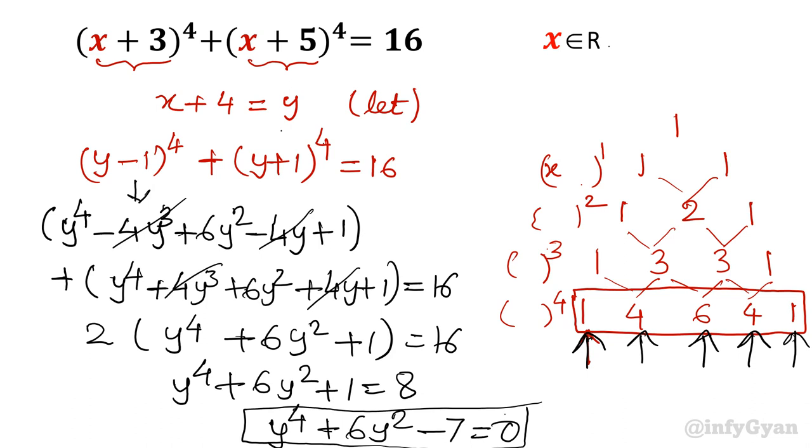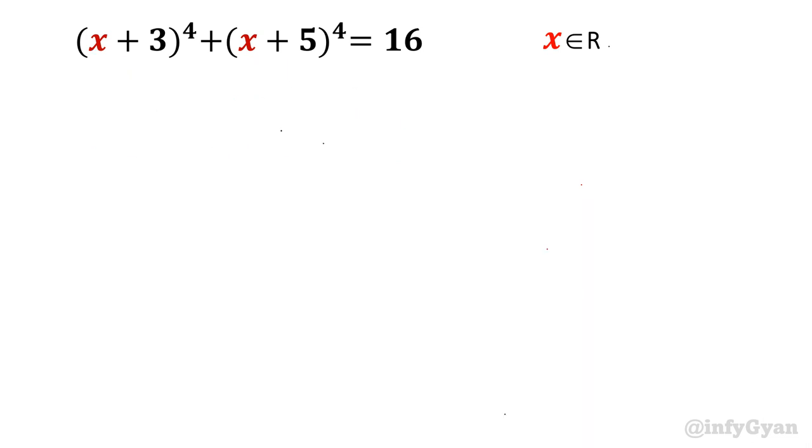Now y^4 + 6y^2 - 7 = 0. Substitute y^2 for t. So equation will convert into t^2 + 6t - 7 = 0.